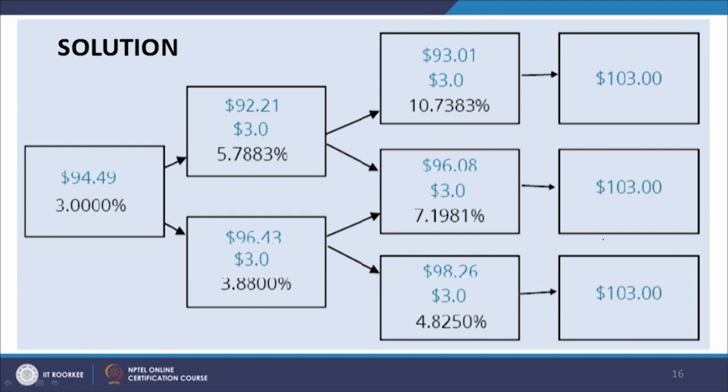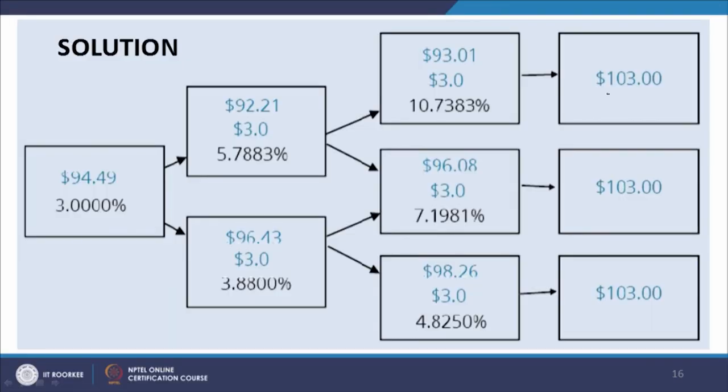This is a 3-year bond, so we start with the cash flows at t=3. At t=3, we get back the principal of 100 and a coupon payment of 3% on the face value of 100, so the total cash flow at t=3 is 103. This cash flow occurs irrespective of what the interest rates are — in each case we have a cash flow of 103.